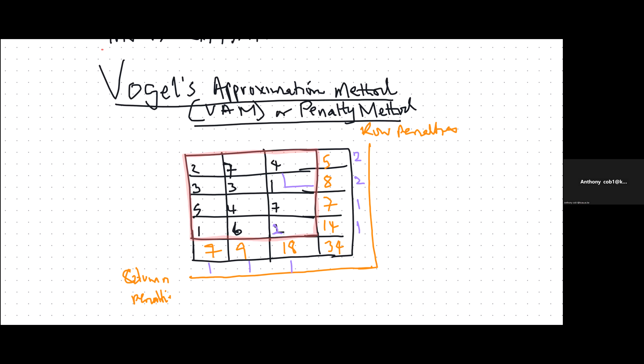We are going to allocate either eight or eighteen, and we always allocate the smaller of the two, so we allocate eight. Take away eight, get zero on one side and remain with ten on the other. Then delete any row or column which has been satisfied — in this case we delete the column because the demand is satisfied and the supplier has been depleted. Then we revise the row and column penalties.